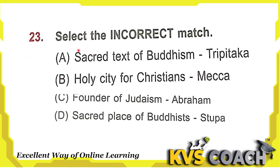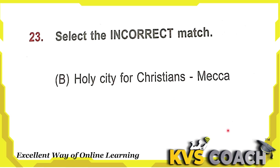Next question: select the incorrect match. Option A: sacred text of Buddhism is Tripitaka — this is correct. Option B: holy city for Christians is Makkah — this is wrong; Makkah is the holy city for Muslims, not Christians. Option C: founder of Judaism is Abraham — this is correct. Option D: sacred place of Buddhists is Stupa — this is also correct. So option B is the incorrect match.